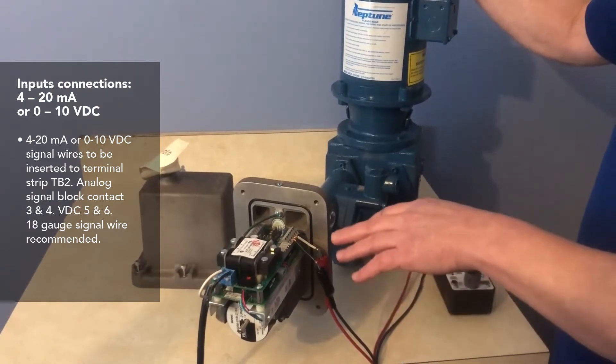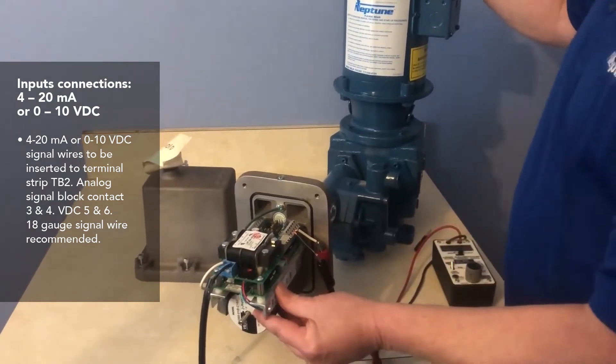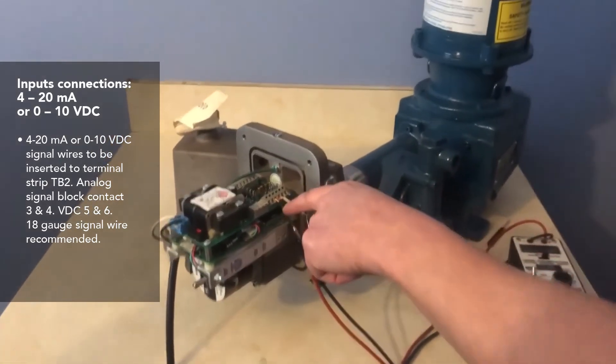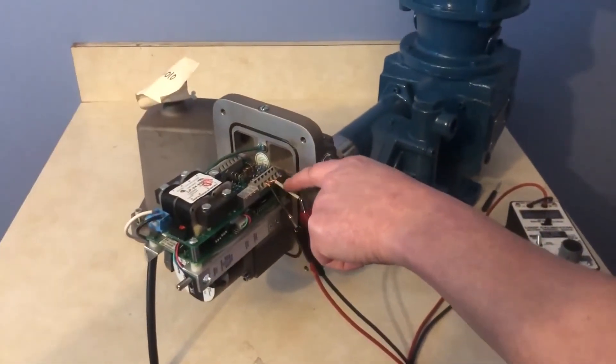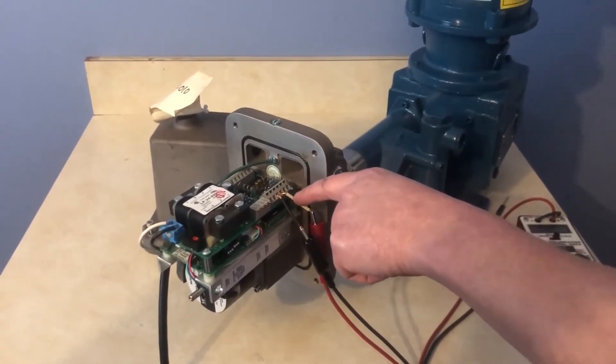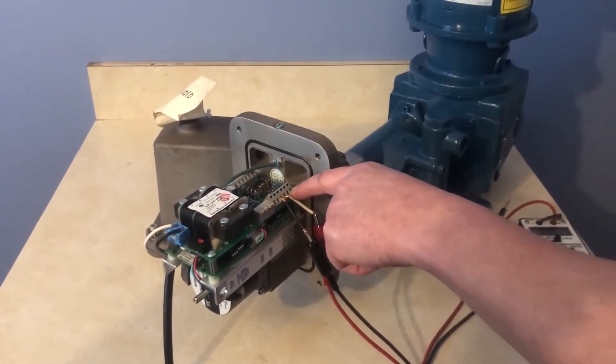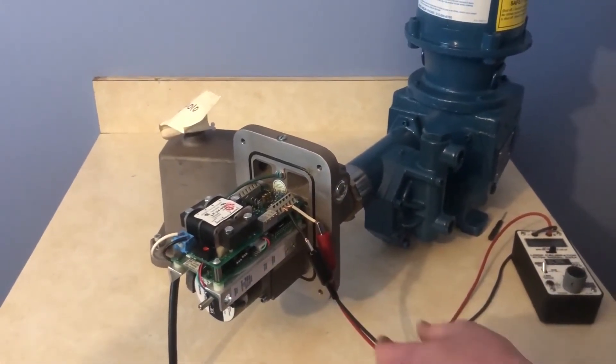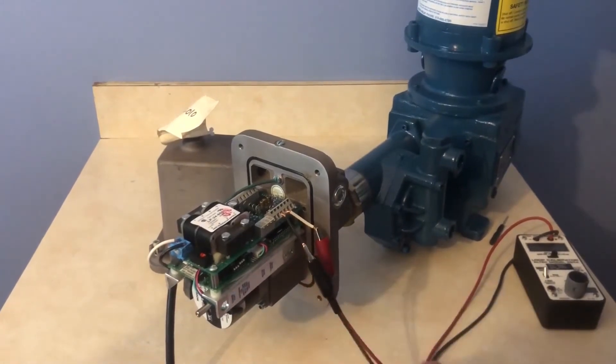Secondly is your current connections, which is on terminal block TB2. Connectors three and four are for the analog, but there is an optional voltage connection on five and six. We're going to be using analog today because that's a majority of what the customers use.